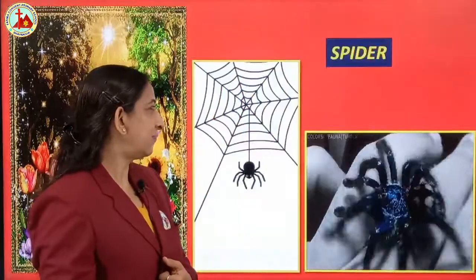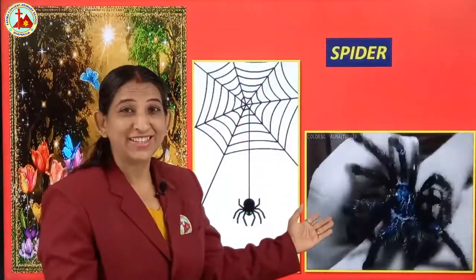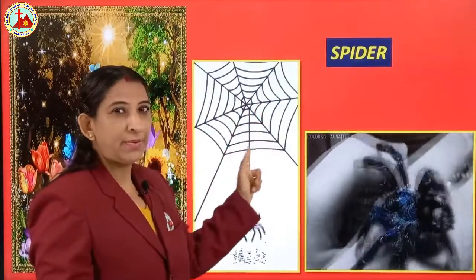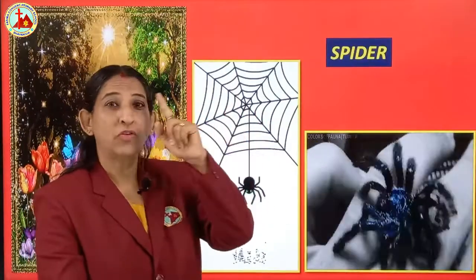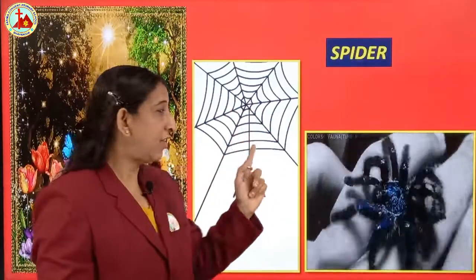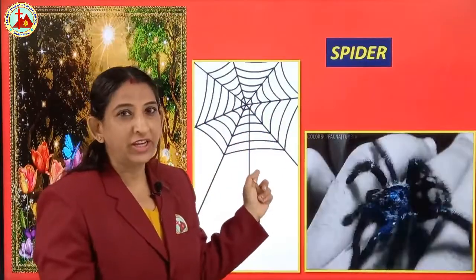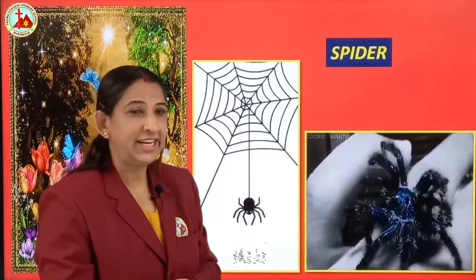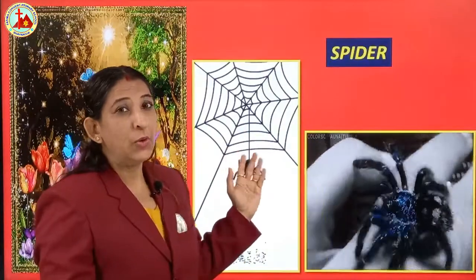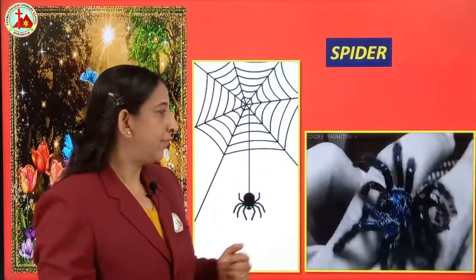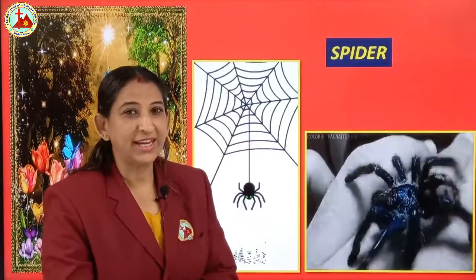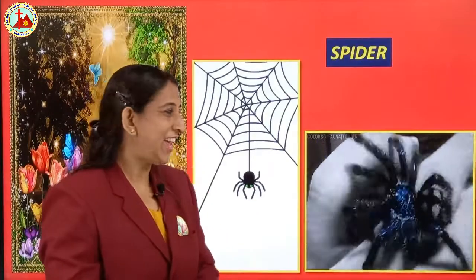Next is spider. It makes webs on the ceilings of our house. We have to clean our houses every week — broom it out and clean. What does spider do? It makes a web. Which insect is this? Spider. Repeat after me — spider.